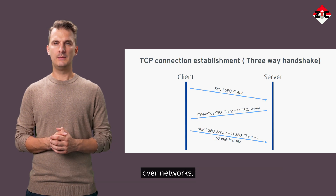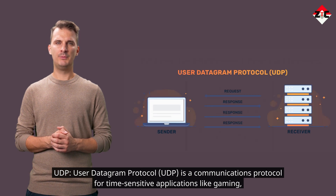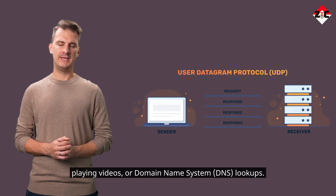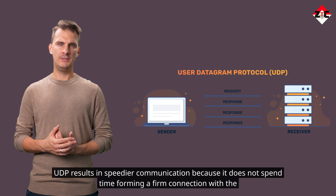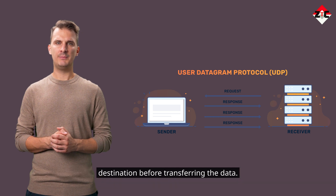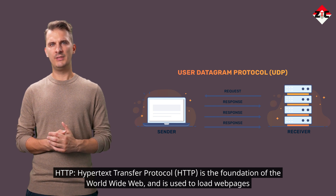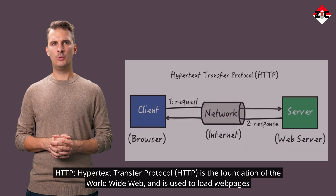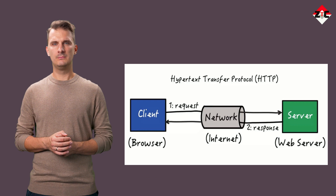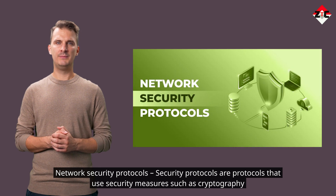UDP — User Datagram Protocol — is a communications protocol for time-sensitive applications like gaming, streaming video, or DNS lookups. UDP results in speedier communication because it does not spend time forming a firm connection with the destination before transferring data. HTTP — Hypertext Transfer Protocol — is the foundation of the World Wide Web and is used to load web pages using hypertext links.